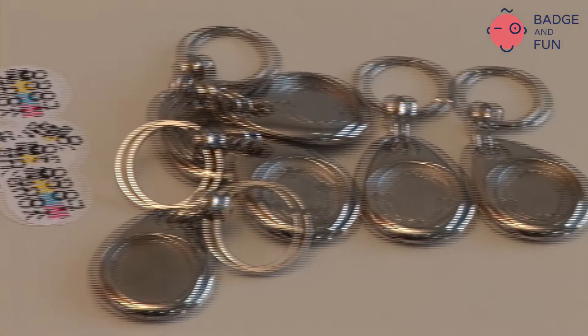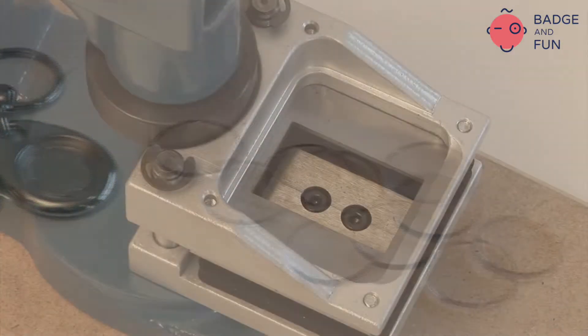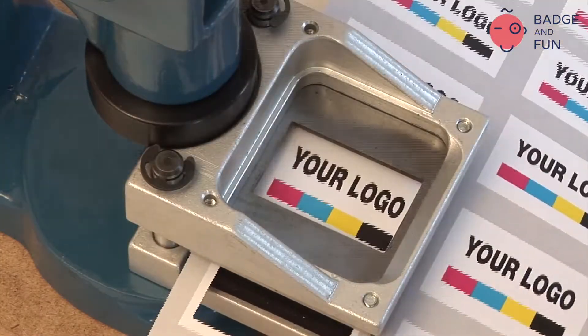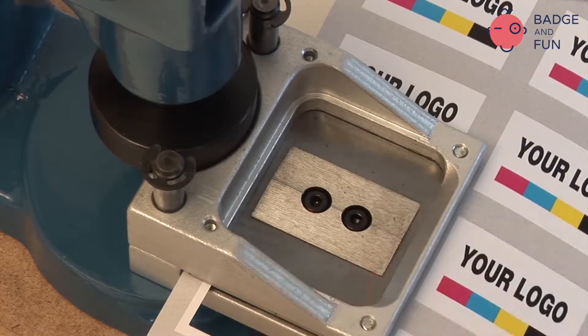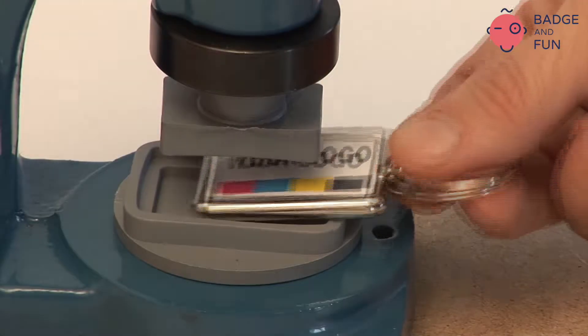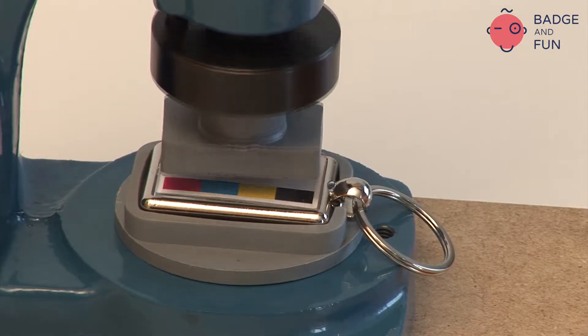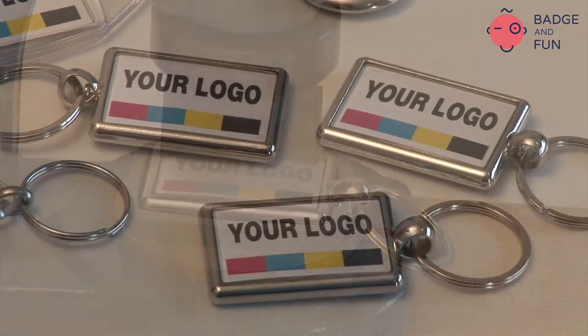The machine has two functions. First is cutting out the paper that will be the material used to customize our products. The second one is to help assembling the different promotional metal items such as keyrings, pins, bag holders, etc.